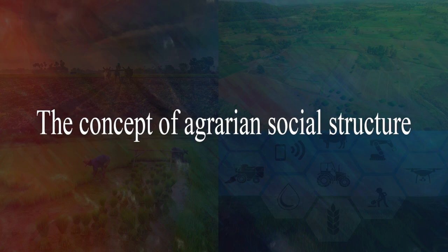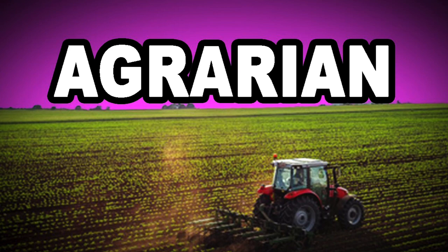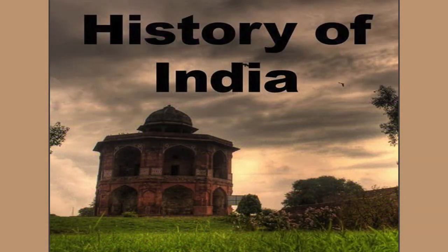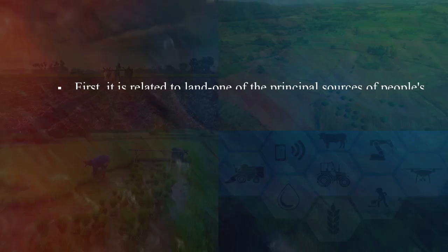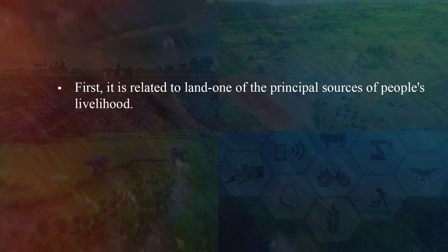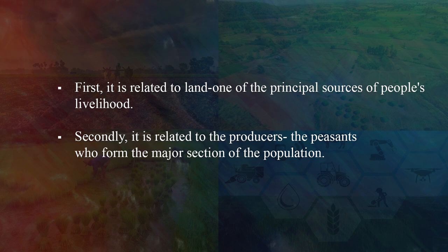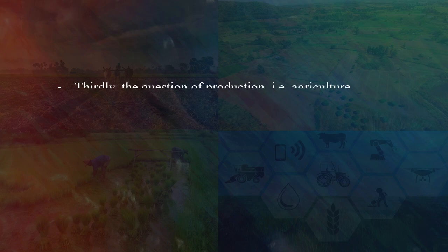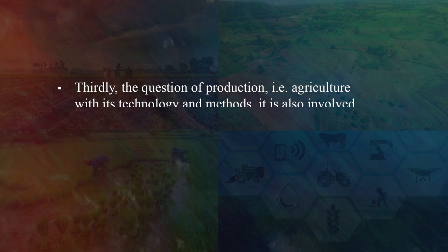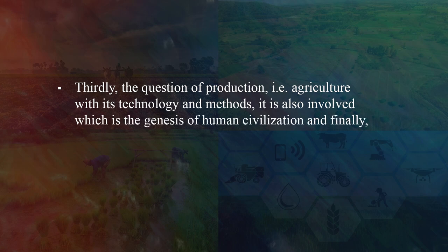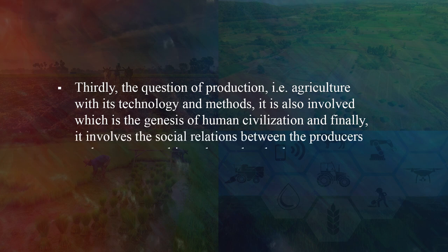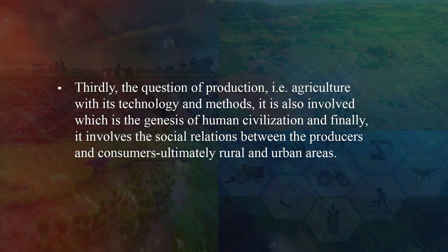Let us understand the concept of agrarian social structure. Agrarian relations represent an important area of social life deeply rooted in the history of India, since it is related to four basic questions. First, it is related to the land, one of the principal sources of people's livelihood. Secondly, it is related to the producers — the peasants, who form the major section of the population. Thirdly, the question of production, that is agriculture with its technology and methods, which is also the genesis of human civilization. And finally, it involves the social relations between producers and consumers, ultimately between rural and urban areas.